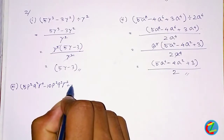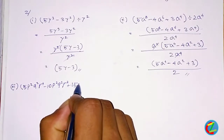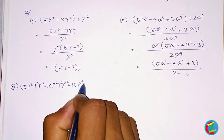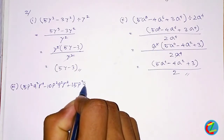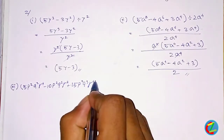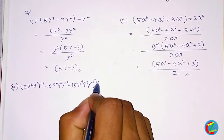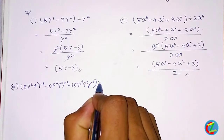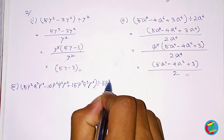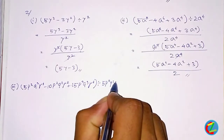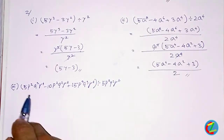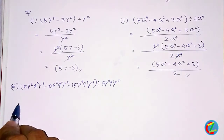Q squared R squared plus 15, P to the power of 3, Q to the power of 3, R to the power of 4 whole. 5, P to the power of 2, Q squared R squared.